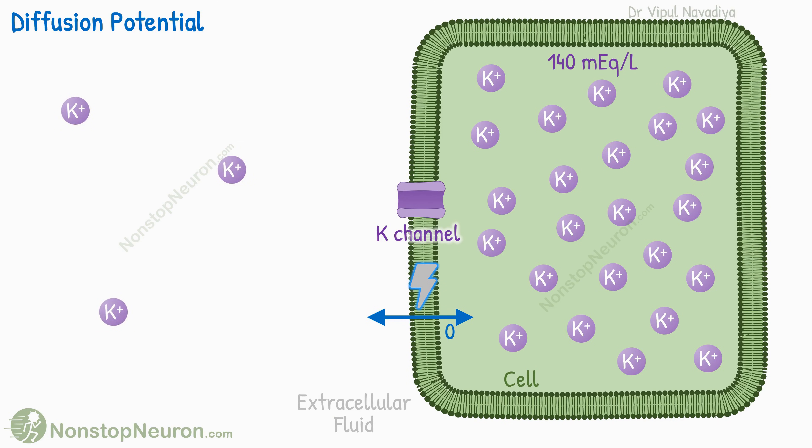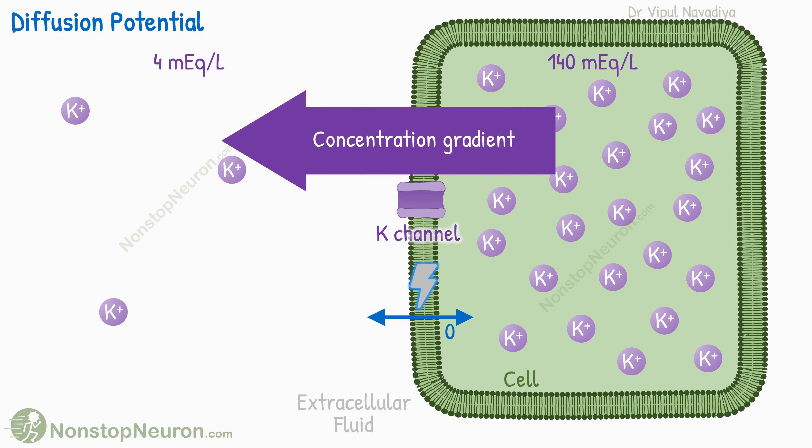And that outside the cell is about 4 mEq per liter. Thus, there is a concentration gradient favoring the exit of potassium. So, potassium ions diffuse out of the cell.